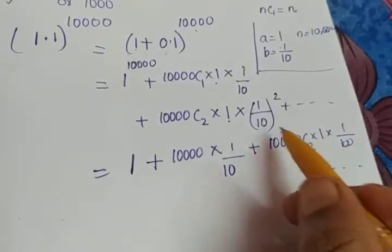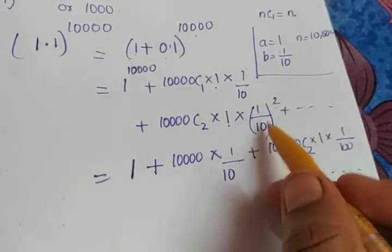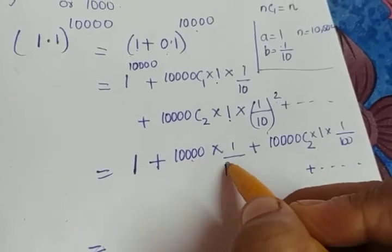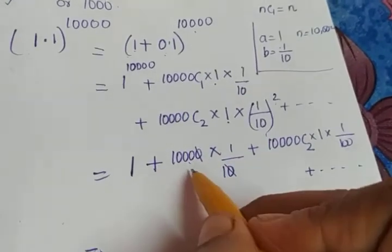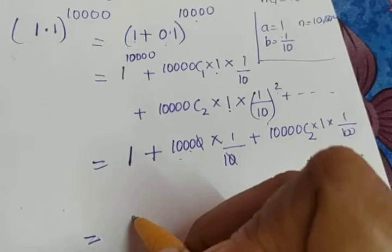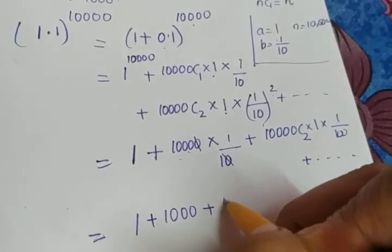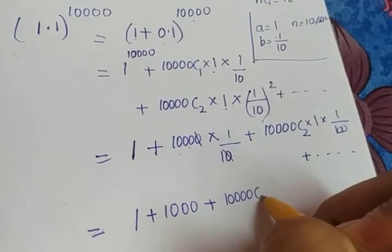1 by 100 - how I got it: 1 by 10 square will be 1 square by 10 square, which is 1 by 100. That is equal to here: 10,000 into 1 by 10, this gets cancelled, so the second term is 1000. So we're getting 1 plus 1000 plus the next term, 10,000C2 into 1 by 100.